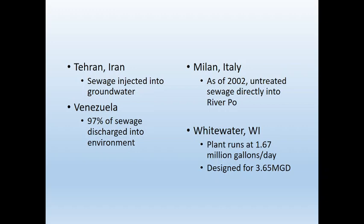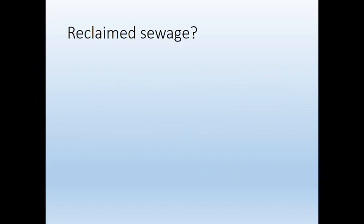Whitewater does a good job — the plant runs at 1.67 million gallons per day, and they won't need to upgrade the plant for a long time because the capacity is almost twice that. I wanted to think about what happens after we dump that treated water into the river — that cleaned-up water, what should be the right thing to do? This is going to be part of your assignment — looking at this idea.